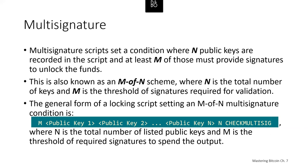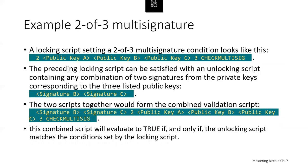The general form of a locking script setting an M-of-N multi-signature condition is: M, followed by one or more public keys (1 through N), then the number N, followed by OP_CHECKMULTISIG. A locking script setting a two-of-three multi-signature condition would look like: 2, public key A, public key B, public key C, 3, OP_CHECKMULTISIG.